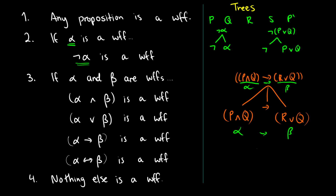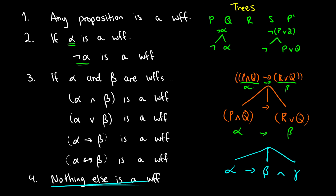Our final rule closes it up: nothing else is a WFF. So for instance, we cannot have alpha arrow beta and gamma all combined at once — we would have to do these in steps. That would not be a well-formed formula.